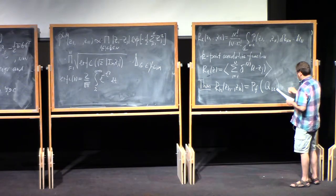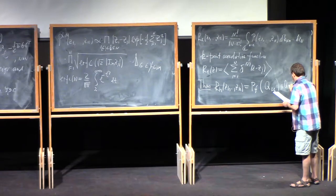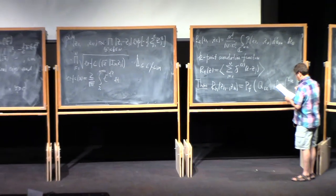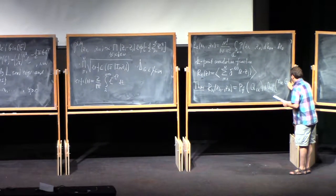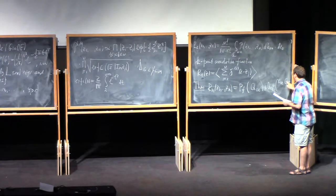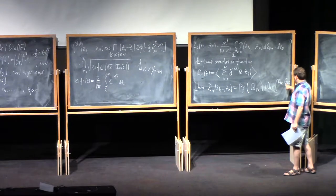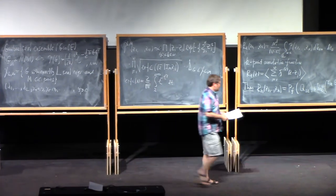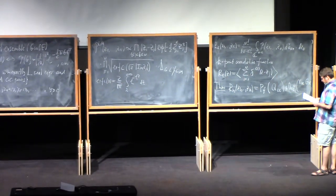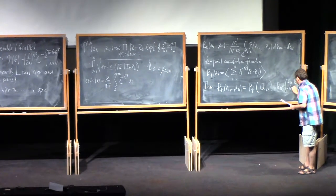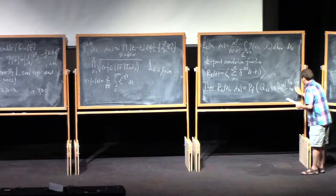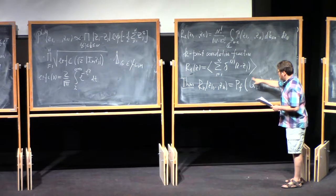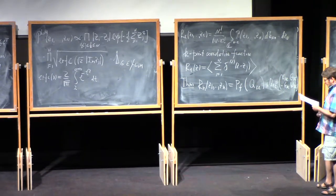These blocks Q_{k,l} are anti-symmetric: Q_{k,l} = −Q_{l,k}. So k, l go from 1 to n. All entries — three different types of entries in this matrix — can be expressed in terms of two anti-symmetric functions. One is known as the kernel function, which I'll call calligraphic K(z_1, z_2), just a function of two variables. The second function is denoted f(z_1, z_2).